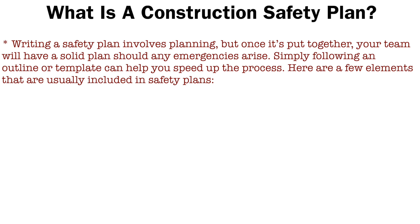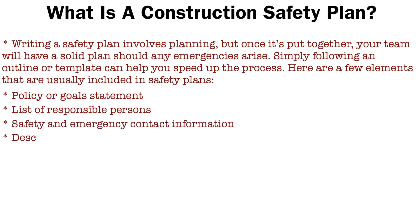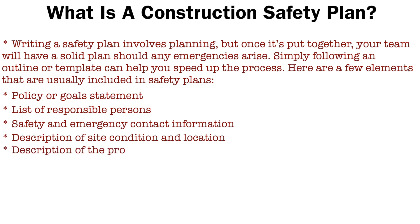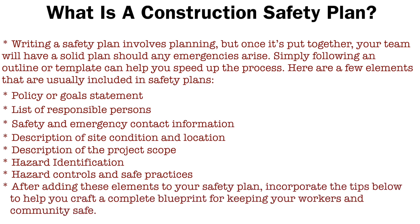A construction safety plan involves planning. Once it is put together, your team will have a solid plan should any emergency arise. Simply following an outline or template can help you speed up the process. Key elements usually involved in a safety plan include: policy or goal statement, list of responsible persons, safety and emergency contact information, description of site conditions and location, description of project scope, hazard identification, hazard controls, and safe practices.